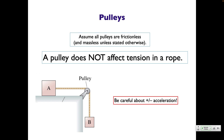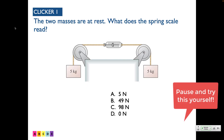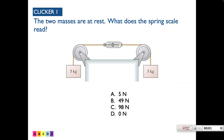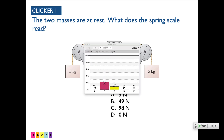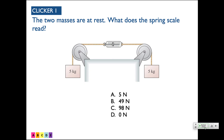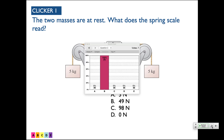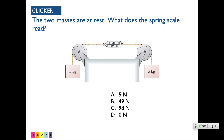Clicker question results: the answer is B. Remember, if this thing were attached to a wall on one side, what would it read? 49 newtons. As long as it's in equilibrium, it's going to read 49 newtons — 49 is the tension everywhere in the string. This thing is just measuring the tension.